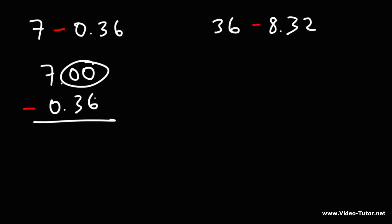Go ahead and try these two examples. 7 minus 0.36. So notice that this number goes to the 100th place. So we need to add two 0s to the 7, because we want to have enough 0s where it ends up in the 100th place. So this is going to be 7.00 minus 0.36. In other words, we want to make sure we have enough 0s to line up with these numbers.